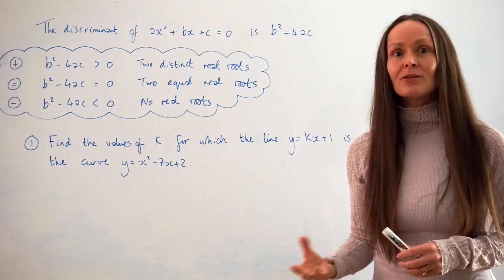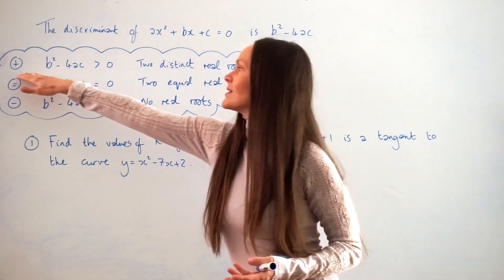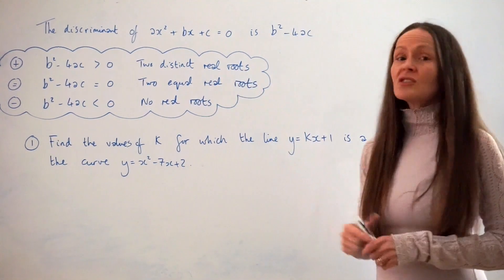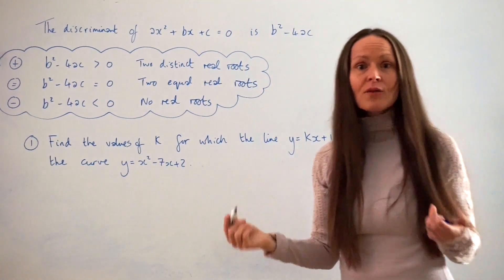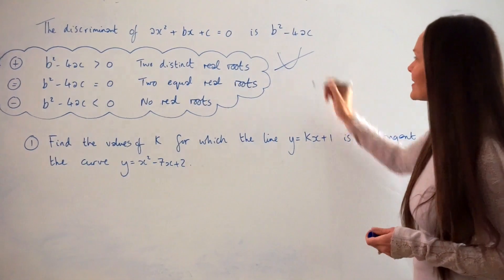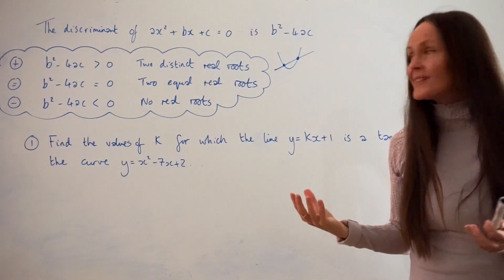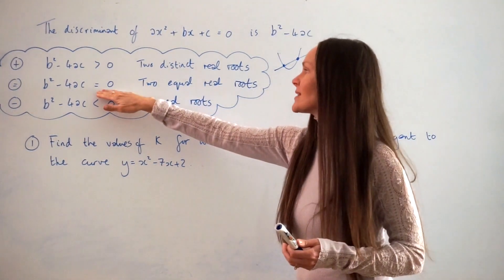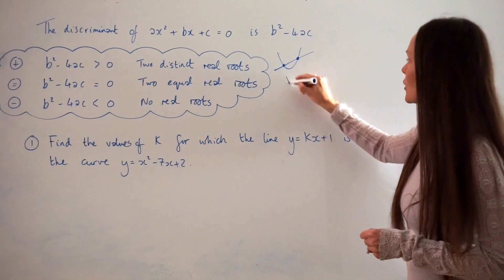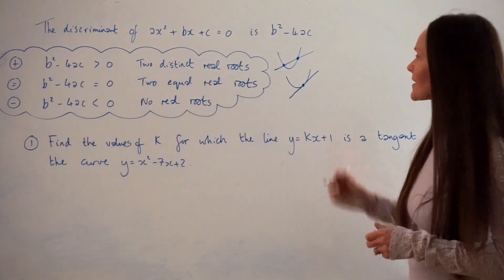If when you work out the discriminant it's positive — greater than zero — it means there are two distinct real roots. That just means the curve and the straight line intersect in two separate places, like in this sketch here. If the discriminant equals zero, it means there are two equal real roots, which means the curve and the straight line intersect in just one place, like in this sketch here.